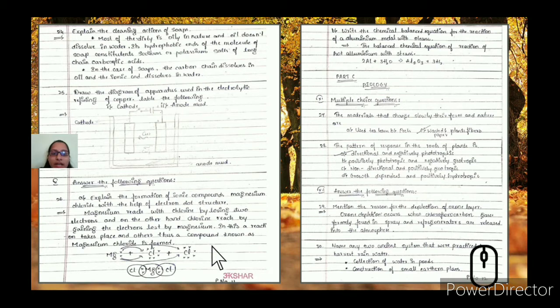Explain the formation of ionic compound magnesium chloride with the help of electron dot structure. Magnesium reacts with chlorine by losing two electrons, and chlorine reacts by gaining the electrons lost by magnesium. This results in the formation of magnesium chloride.